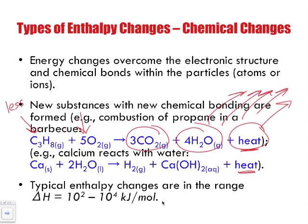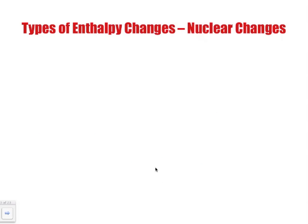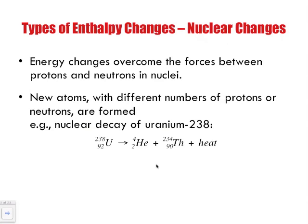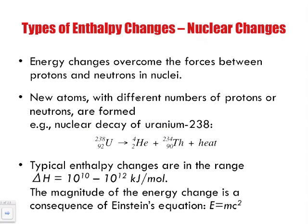Even higher enthalpy changes are found in nuclear reactions. Energy changes must overcome the forces between protons and neutrons in the nucleus, and new atoms with different numbers of protons and neutrons actually form. For example, uranium undergoes nuclear decay, releasing a helium particle and heat — an exothermic process. The change in enthalpy at the nuclear level is far greater than in chemical or physical changes, with significantly more energy available.